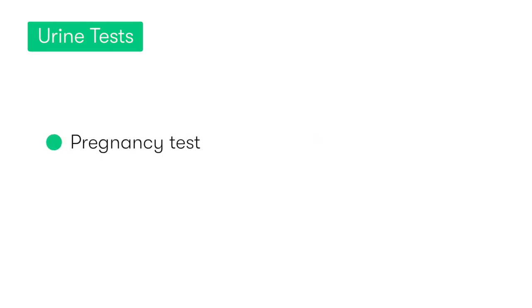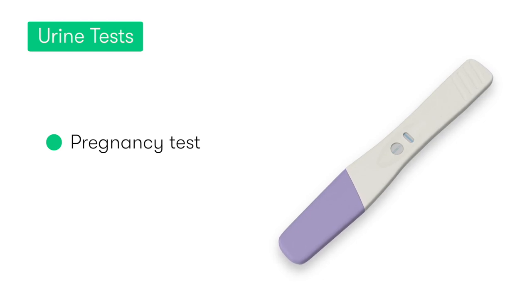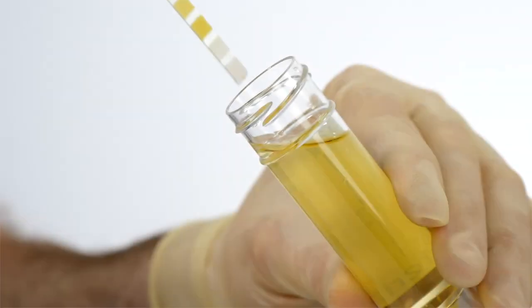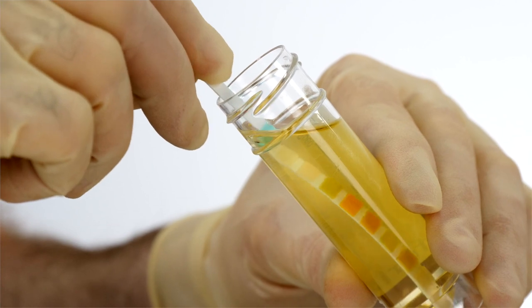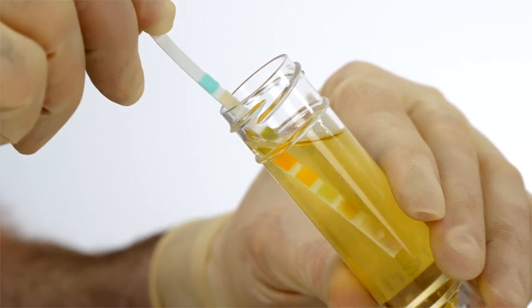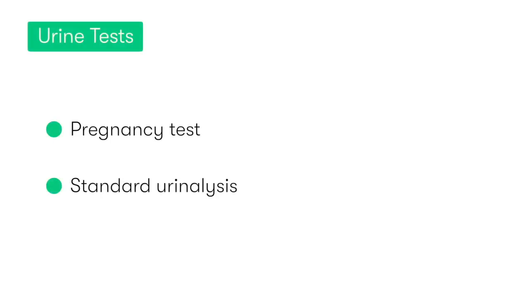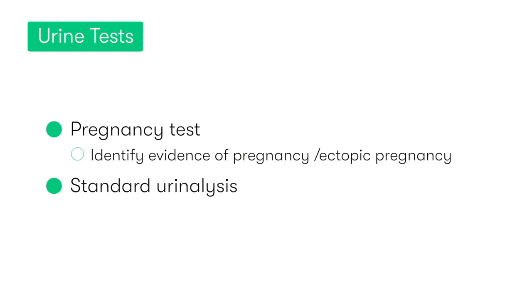Moving on to urine tests: the first investigation we'd want to do is a pregnancy test, most commonly performed with a urine sample but also possible with a blood test. We'd also want to undertake a standard urinalysis. The key reasons are to identify whether a female patient is pregnant and thus potentially has symptoms related to an ectopic pregnancy, and also to look for any evidence of a urinary tract infection that may be the cause of their presentation.